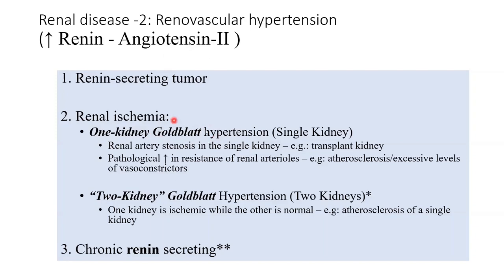One-kidney Goldblatt hypertension mostly applies to transplanted kidneys or scenarios where a person has lost one kidney and is working on a single kidney. In that single kidney, through various vascular scenarios — it could be renal artery stenosis or any cause of increased resistance in the renal arteriole — blood flow to the kidney has been decreased.